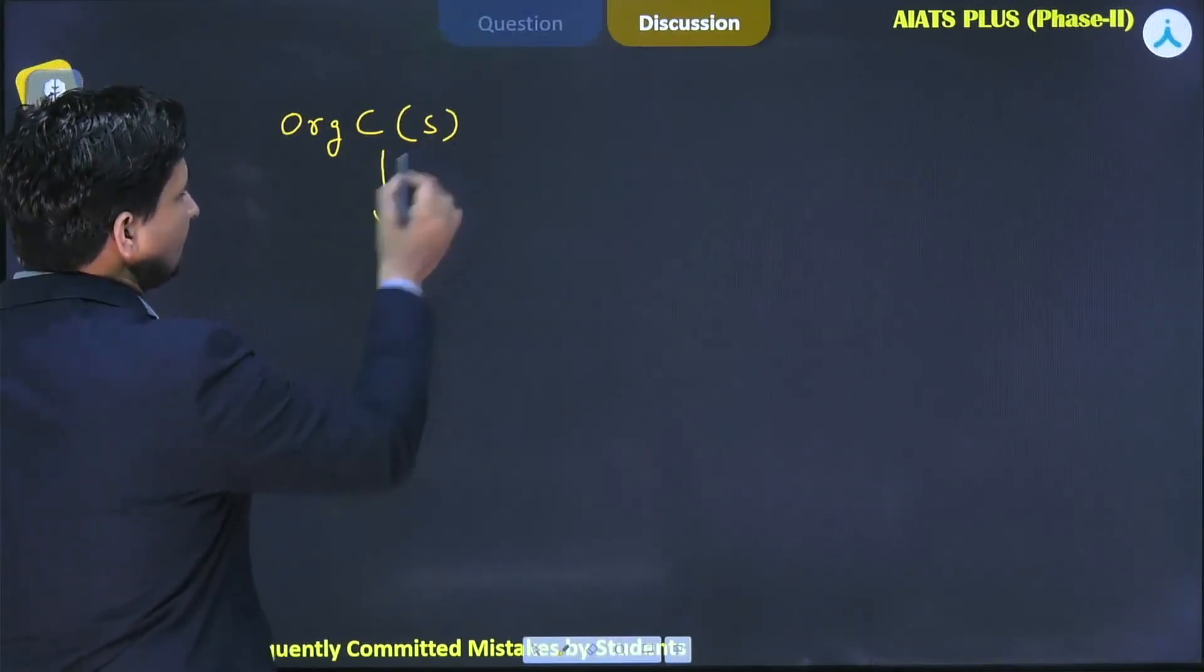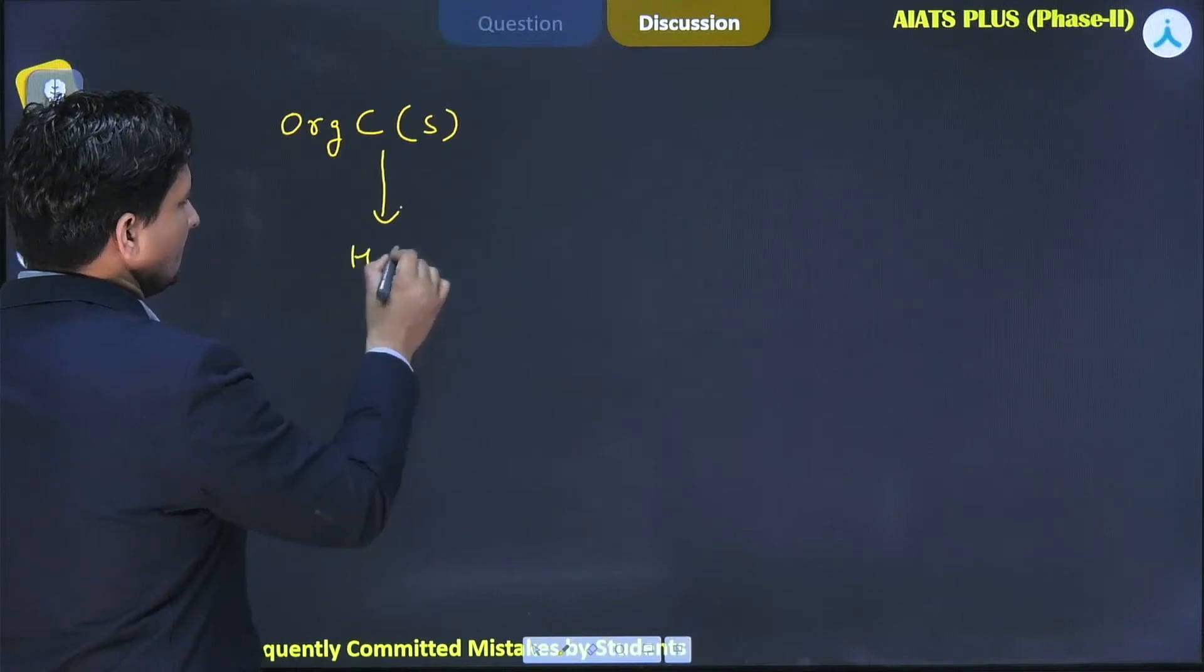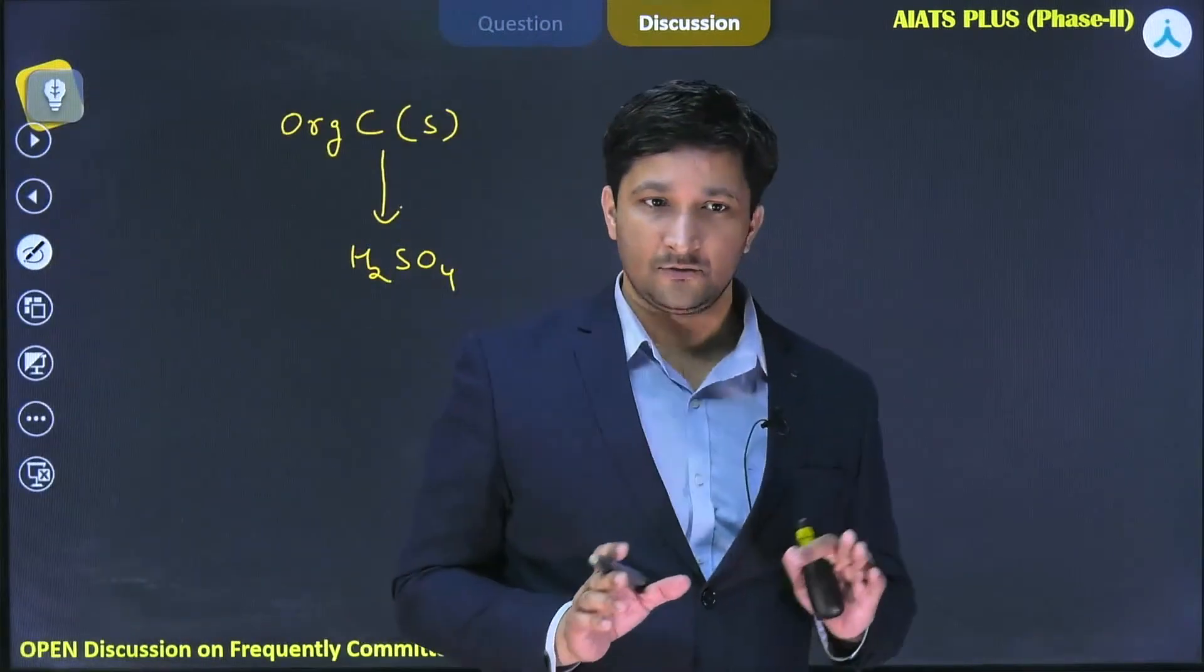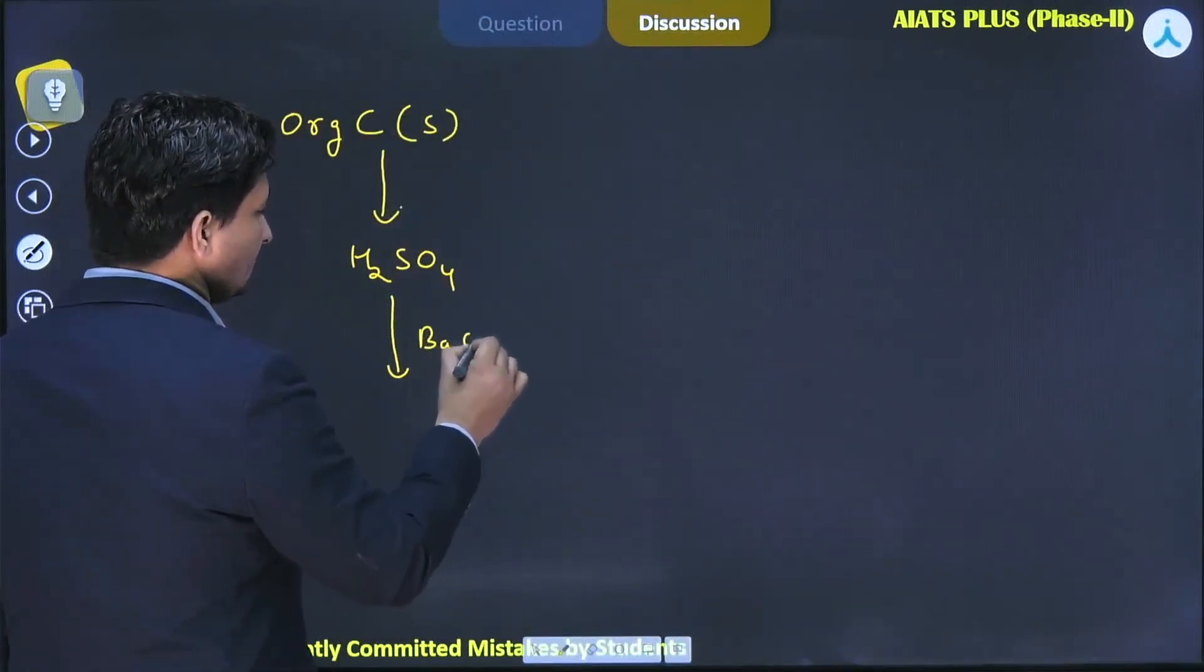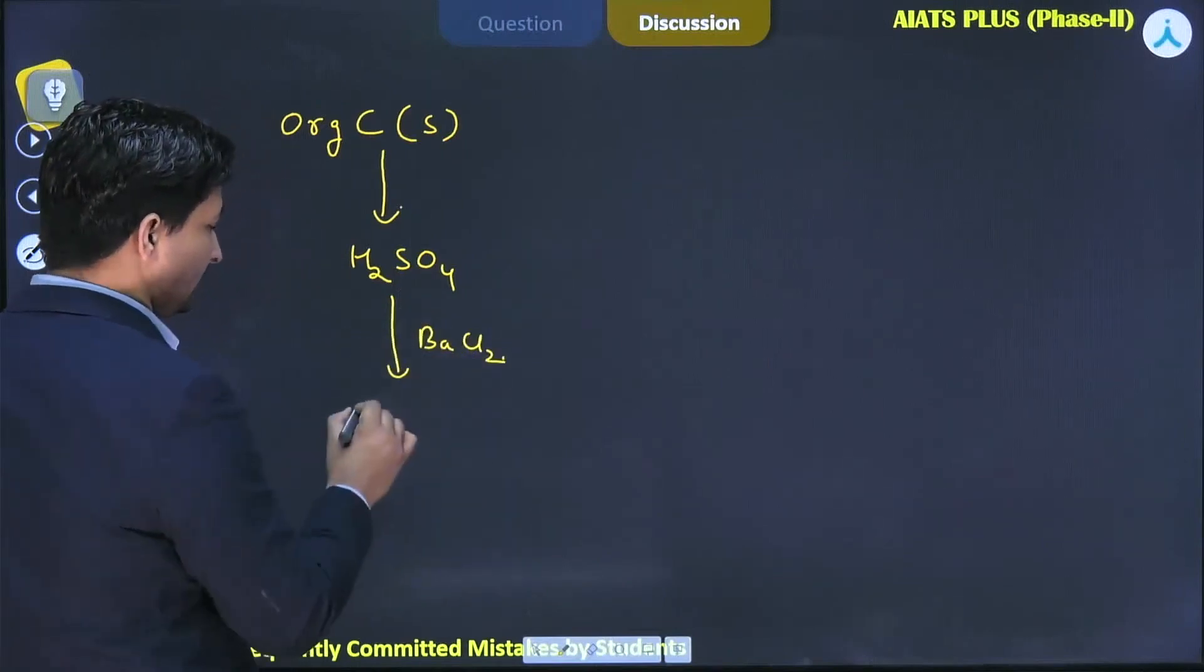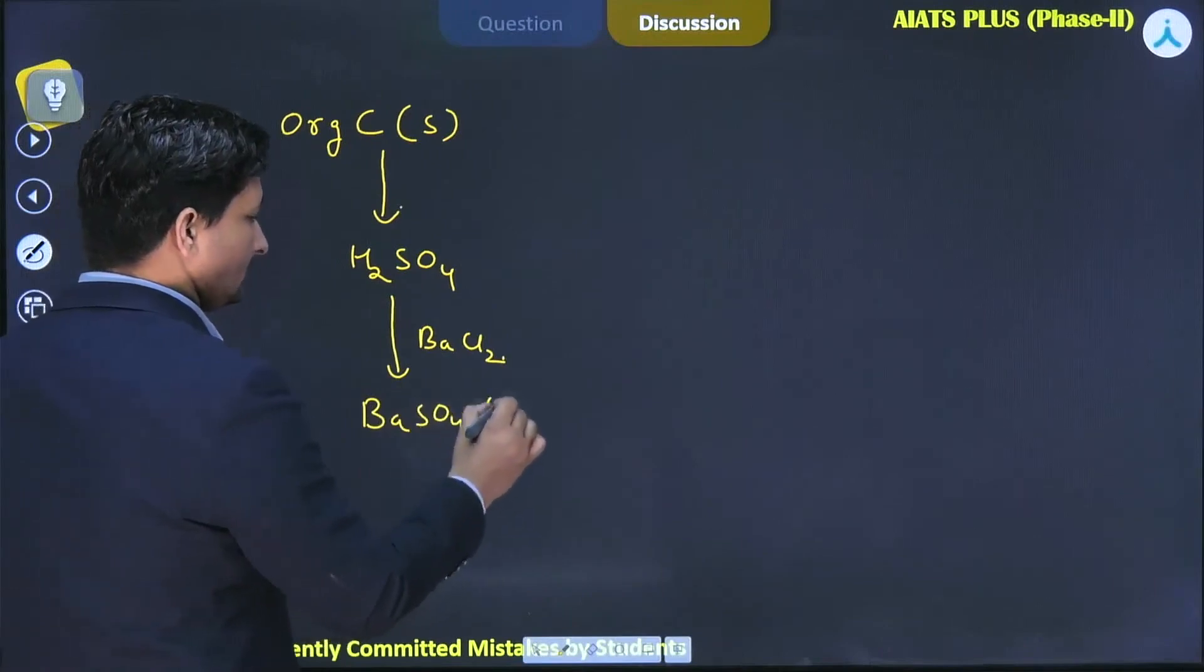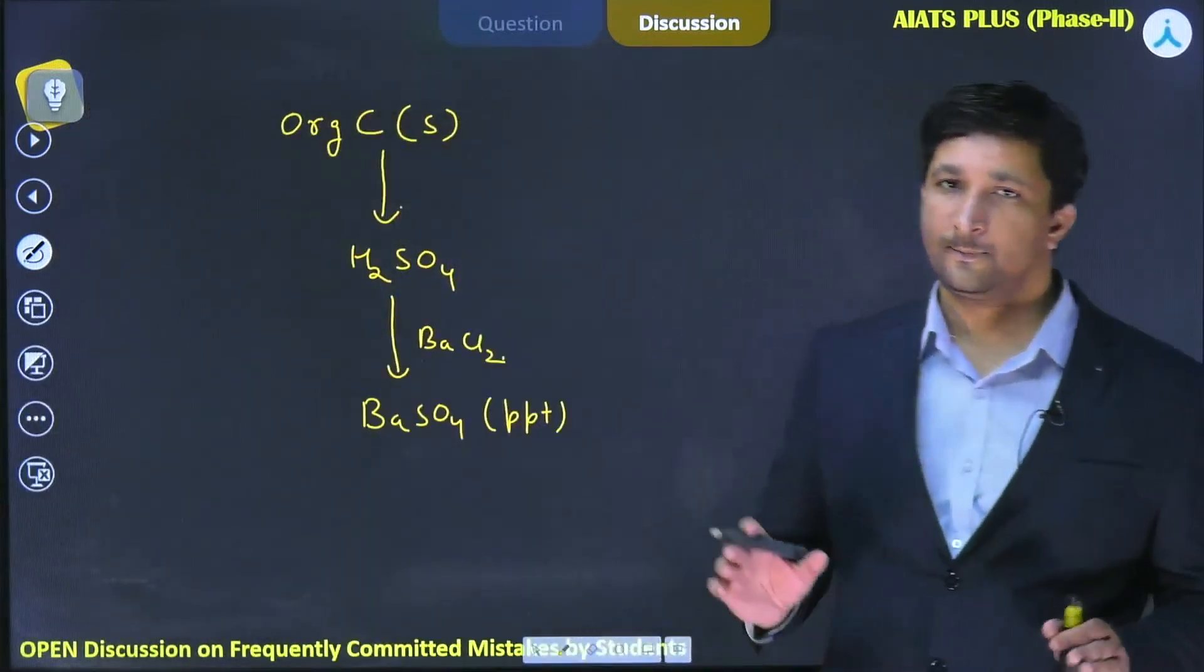The sulfur converts to H2SO4. Remember, the sulfur has been converted to H2SO4. After this, we treat it with barium chloride and then we get barium sulfate precipitate. All this reaction is taking place in our Carius tube only.